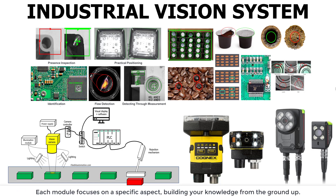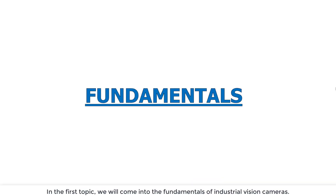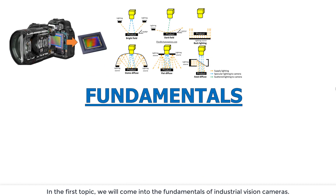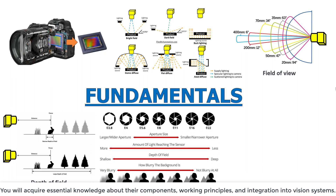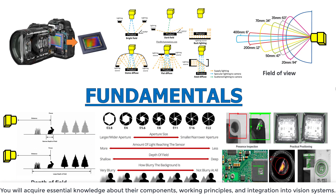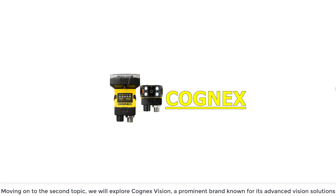This course is structured to provide you with a step-by-step understanding of industrial vision cameras. Its modules focus on specific aspects, building your knowledge from the ground up. Throughout this course, we will explore three main topics. In the first topic, we will cover the fundamentals of industrial vision cameras — you will acquire essential knowledge about their components, working principles, and integration into vision systems.